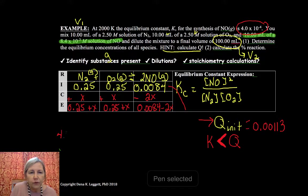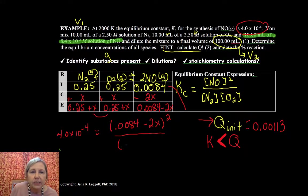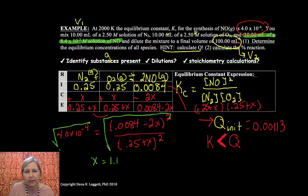So 4.0 times 10 to the minus 4th - these are the same, okay. So I've got NO, I've got 0.0084 minus 2x squared over 0.25 plus x times 0.25 plus x, so that's 0.25 plus x squared. So then to simplify, we're going to take the square root of both sides, do a whole bunch of algebra, and we're going to find that x is equal to 1.17 times 10 to the minus 3.